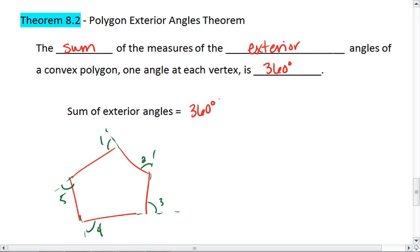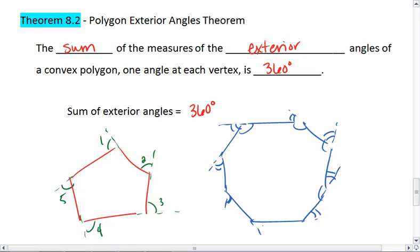And the reason this works is because as our polygons get more sides, we know each interior angle gets bigger. And these interior angles form a linear pair with your exterior angles, making the sum of each exterior angle smaller. We find that these exterior angles always sum to 360 degrees.